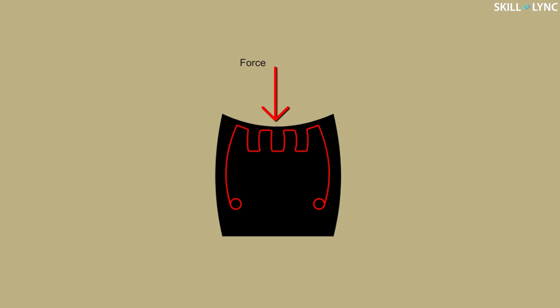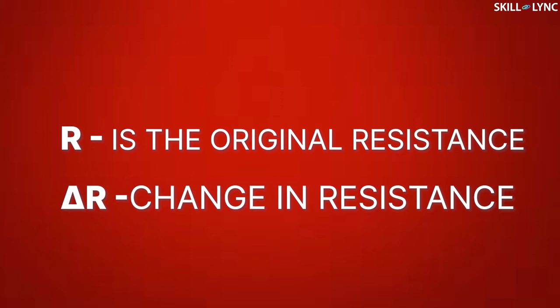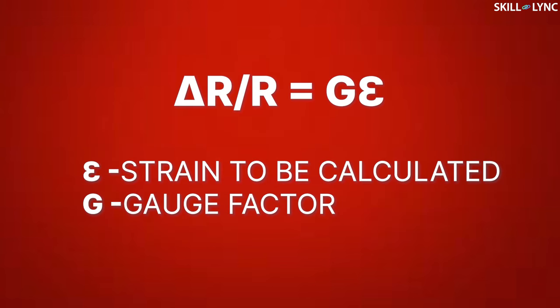This change in resistance can be calculated by using a setup which is discussed further. If R is the original resistance of the strain gauge, then strain is given by the ratio of change in resistance to the original resistance of the strain gauge. Here epsilon is the strain to be calculated and G is the gauge factor.